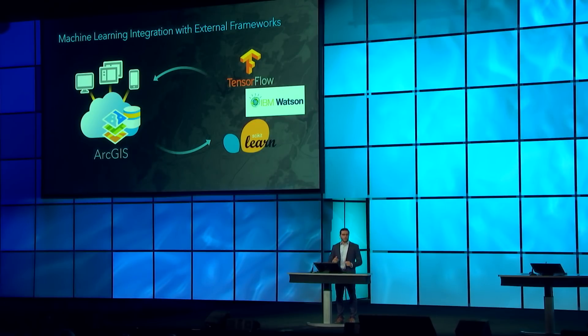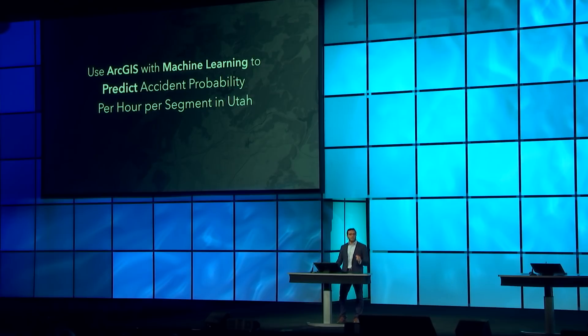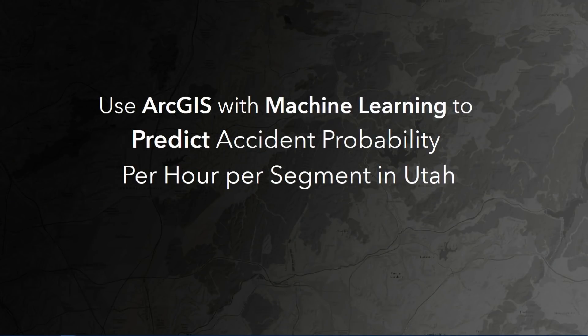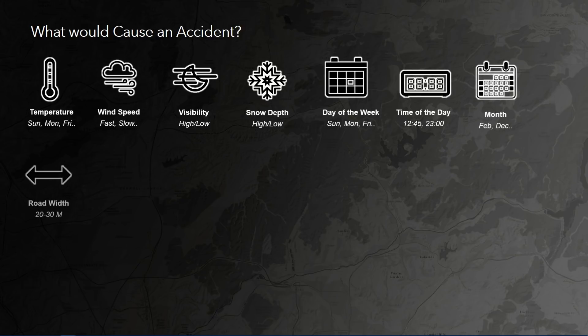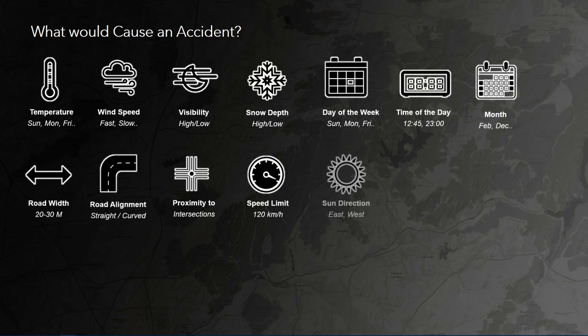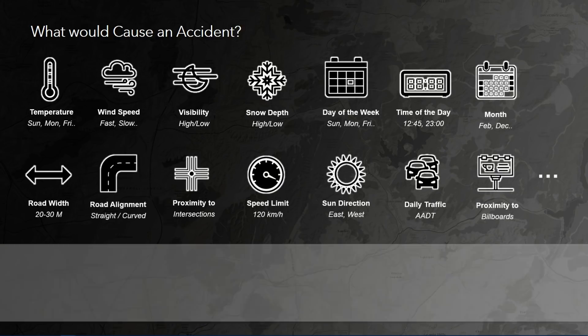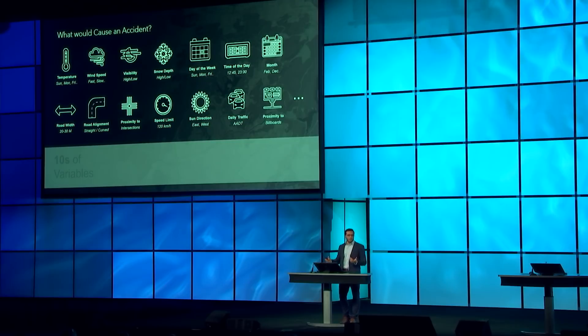We are going to use ArcGIS Pro with scikit-learn of Python, a powerful machine learning engine, to predict the accident probability per segment per hour in Utah. And before jumping to machine learning, we asked ourselves, what could cause an accident in the first place? Is it weather factors like snow, rain, and fog? Is it temporal aspects like time of the day, day of the week, rush hour? Is it spatial aspects like proximity to intersections, or the road width, or the road curvature?